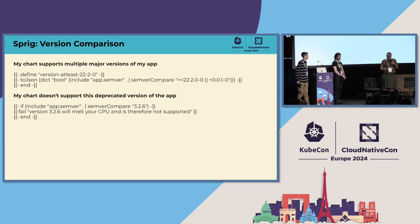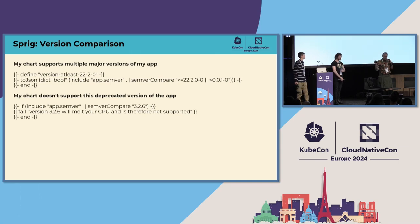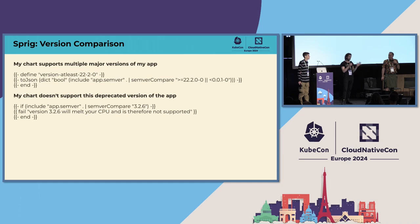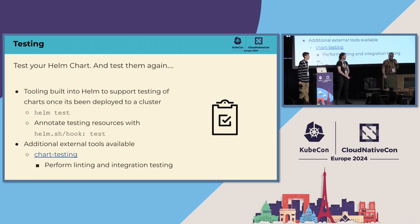For version comparison, here's how you compare your application version: I have a named template called 'app-at-semver,' I compare the versions and do something based on the results. If my app doesn't support a deprecated version, I just call 'fail.' By the way, if any of you aren't using the 'fail' function, it's so handy in so many ways — we could do a whole session on that.